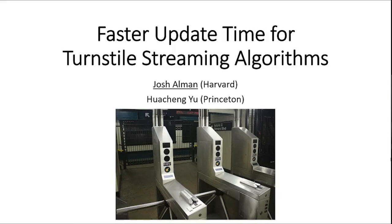We're really happy to have Josh Rowan here with us today. Josh started his PhD at Stanford and then finished at MIT, co-advised by both Ryan and Virginia Williams. He's currently the Rabin Postdoc in TCS at Harvard. He won the best student paper at FOCS 2019 and at CCC 2019. In his free time, he's authored quite a few puzzles for Puzzle Hunts.